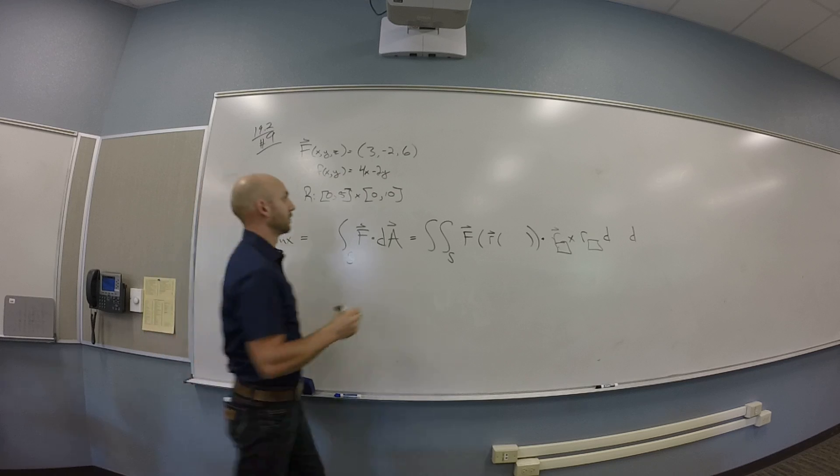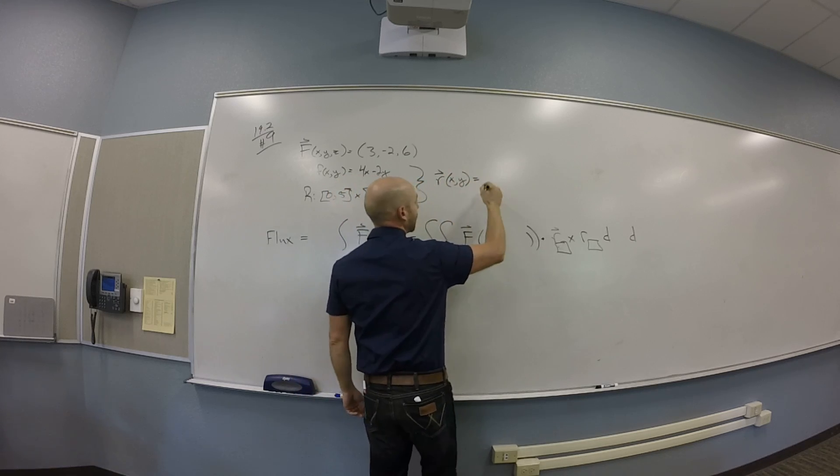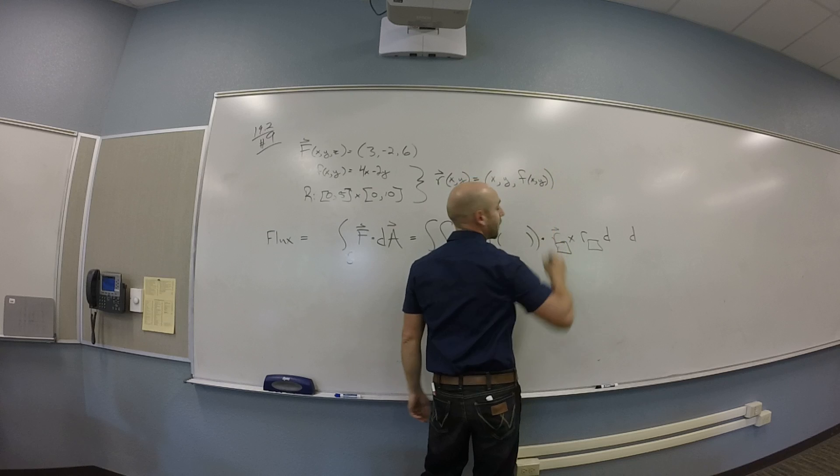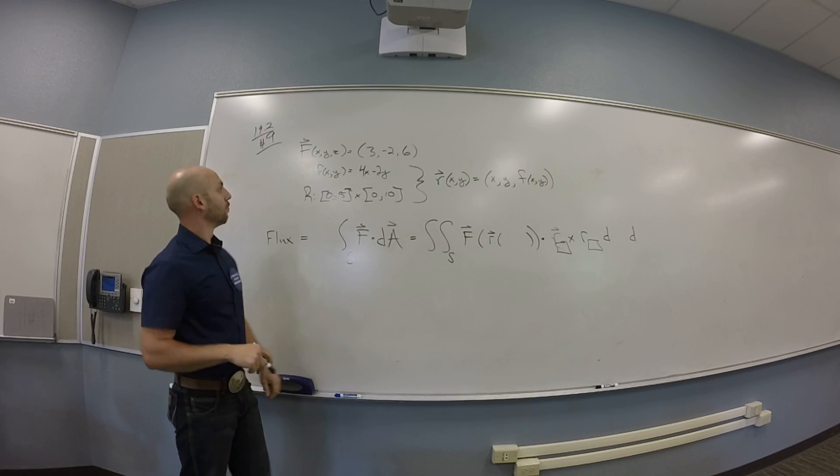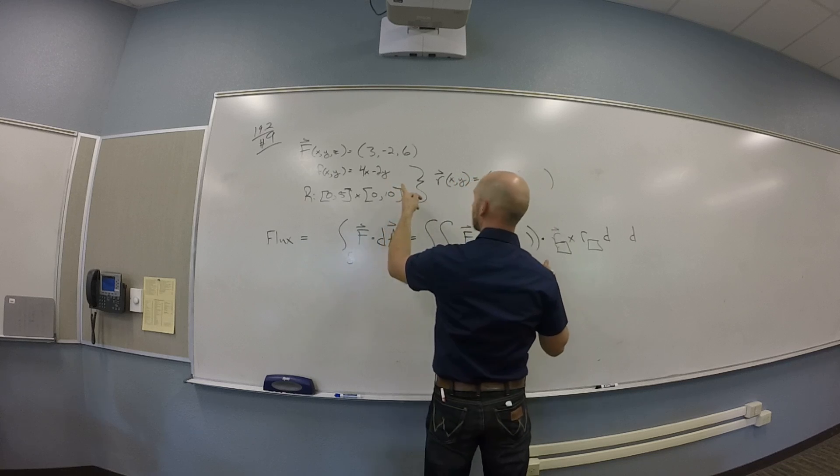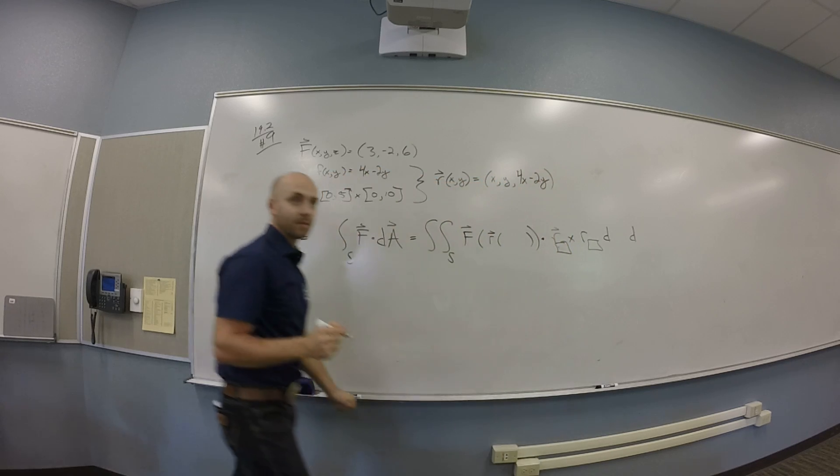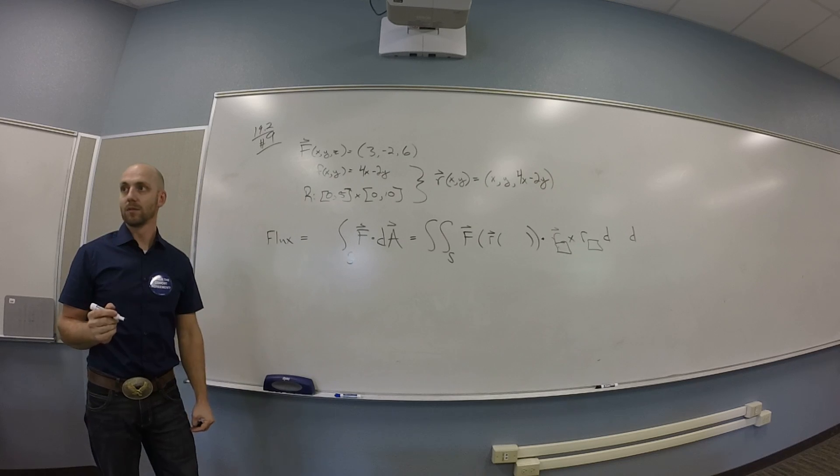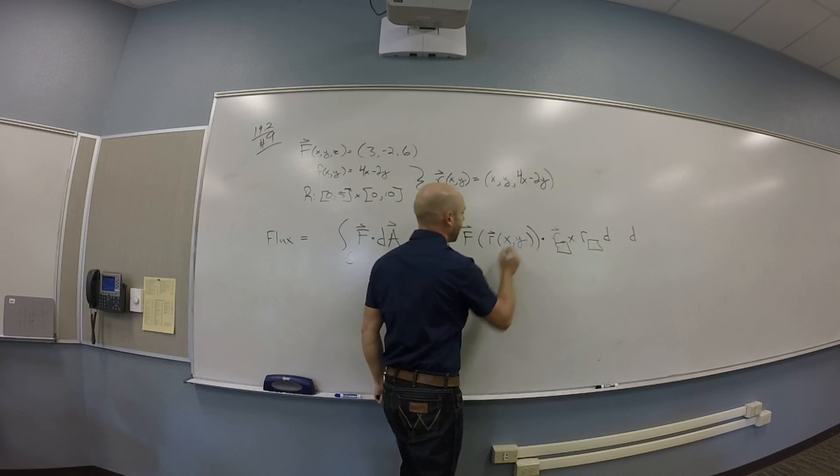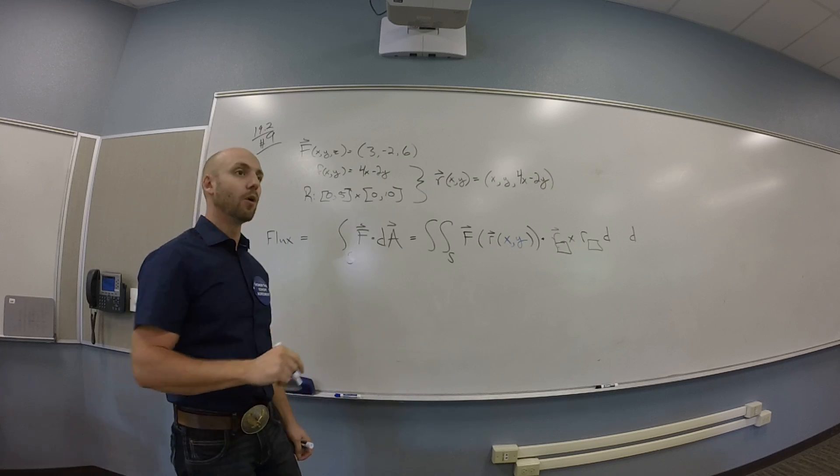X, Y, F of X, Y. So this whole business should tell you that your R should be a function of X and Y. And it should be X, Y, F of X and Y. You guys cool with that? What was F of X and Y though? 4X minus 2Y. So filling in my how to actually execute this thing. This is F at R of X and Y. Do they give me an orientation in here? Upward. They said oriented upward.